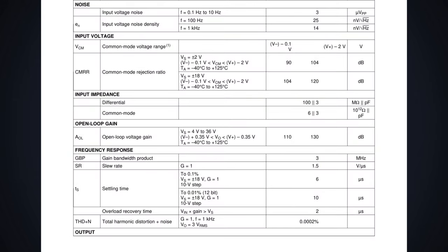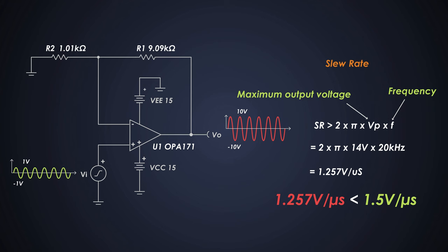Luckily for us, this op-amp has a slew rate of 1.5V per microsecond, which is more than enough for our needs. So this op-amp can handle this slew rate.